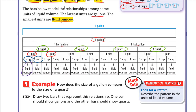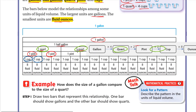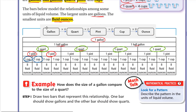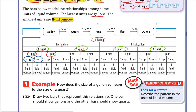We can also show this in a chart. From gallon to quart, multiply by four. From quart to pint, multiply by two. From pint to cup, multiply by two. From cup to ounce, multiply by eight.